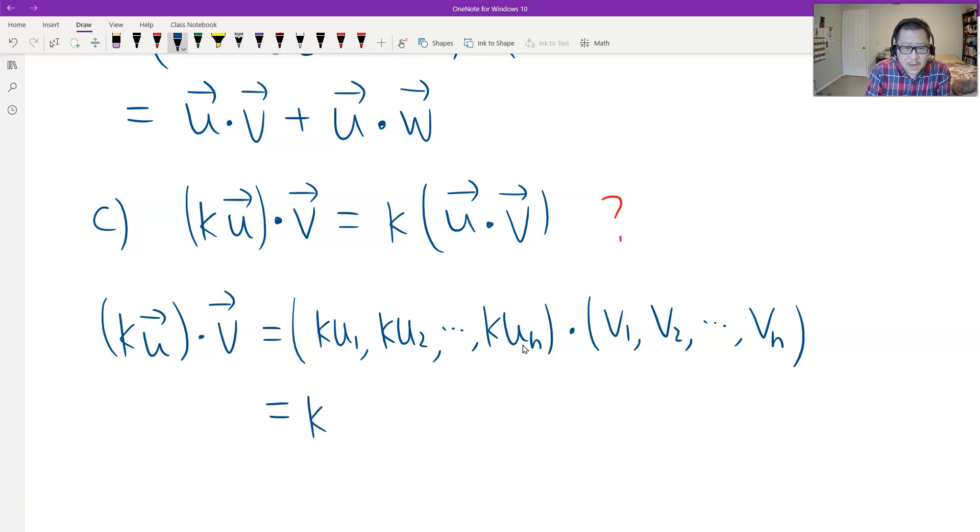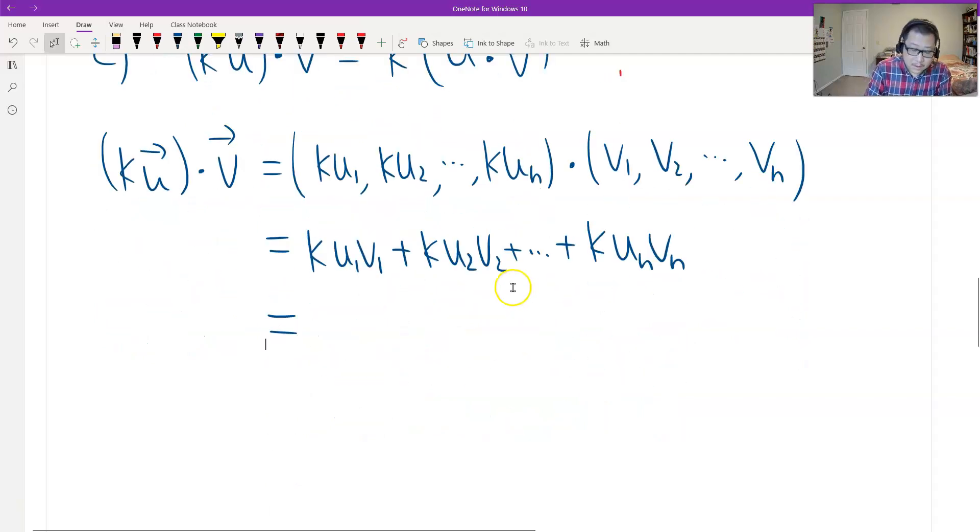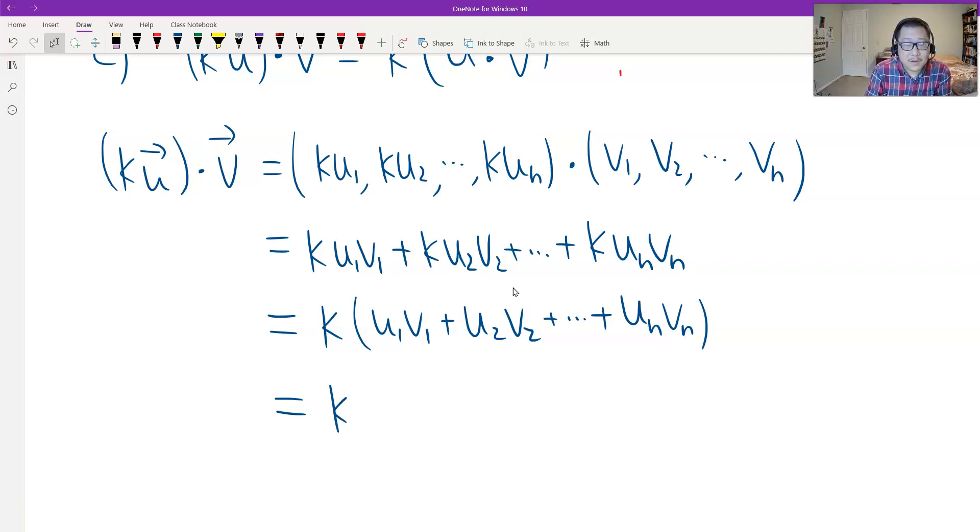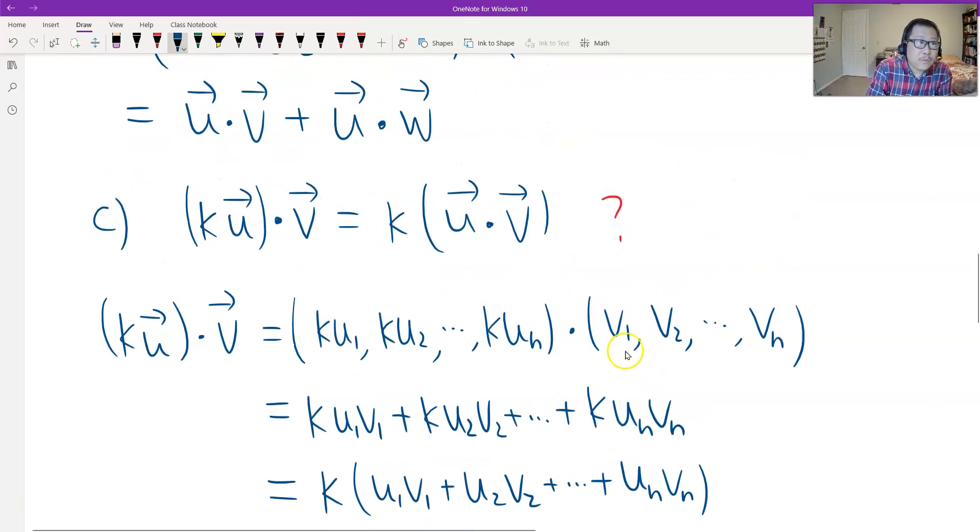By the definition, this should be K times U1 V1 plus K times U2 V2 plus dot dot dot K times UN VN. So, we can factor out the K. We can factor the K out. So, K times U1 V1, U2 V2, dot dot dot goes to UN VN, which is the dot product. So, K times the dot product. If you like it, put a parenthesis. So, this is the proof for C. So, this is true. And then the last.